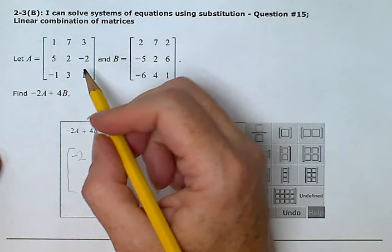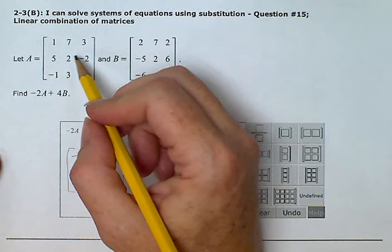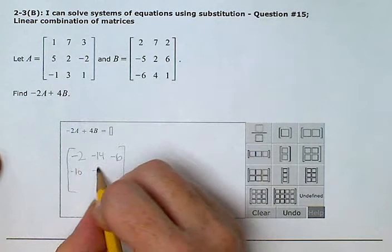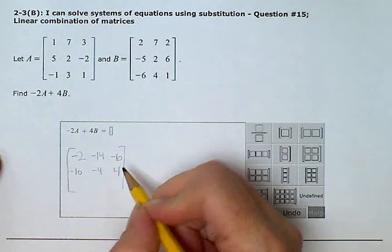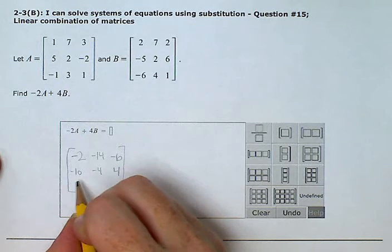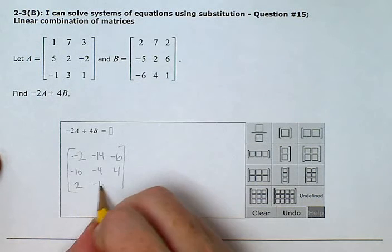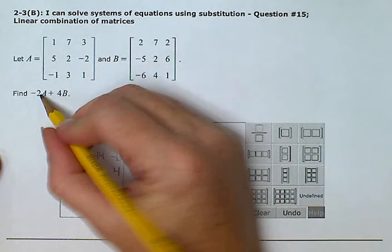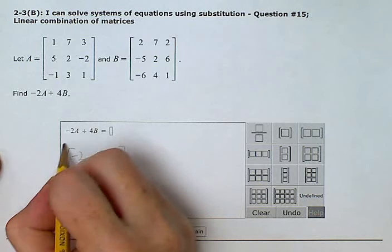Second row: 5 times -2 is -10, 2 times -2 is -4, -2 times -2 gives me a positive 4. -1 times -2 is positive 2, 3 times -2 is -6, 1 times -2 is -2. This now is the matrix -2A.